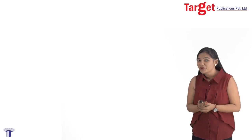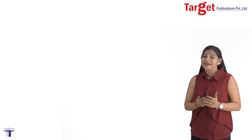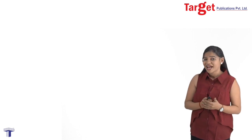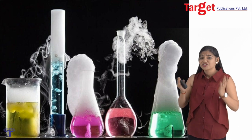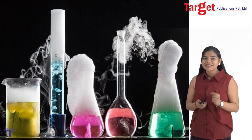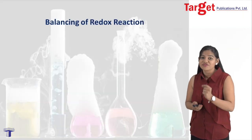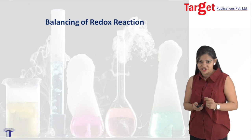Hi students. In our previous module we studied how to find oxidation number, identify oxidizing agents and reducing agents. Now since we are very much clear with our basic terms, let's start with the balancing of redox reactions.